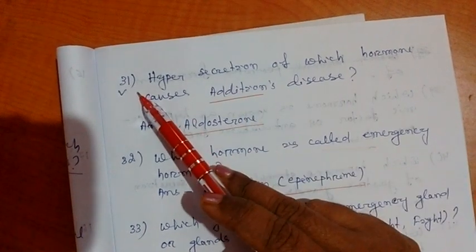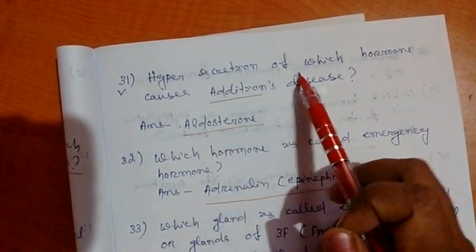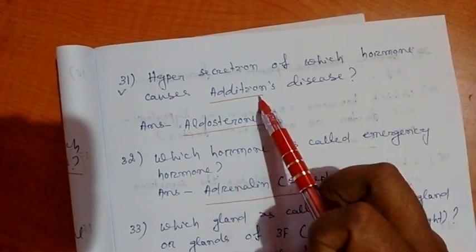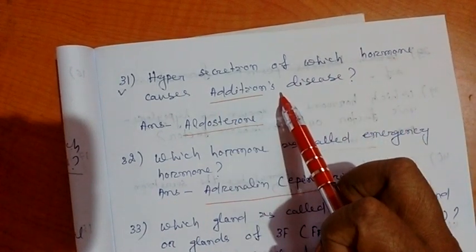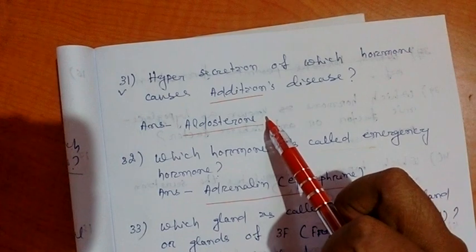Now come to question number 31. Hypersecretion of which hormone causes Addison's disease? That is aldosterone.